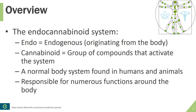Let's break down the word endocannabinoid so that we have a good understanding of this as we progress through this presentation. We will look at the first portion of this word, which is "endo." Endo is a shortened form of endogenous, which basically means originating from the body or produced within the body. A good example of this would be your hormones, which are produced inside your body and are therefore considered endogenous hormones.